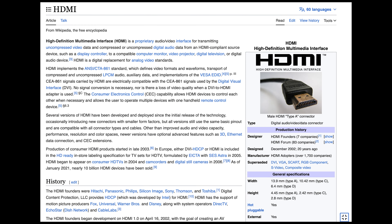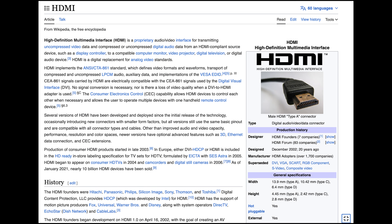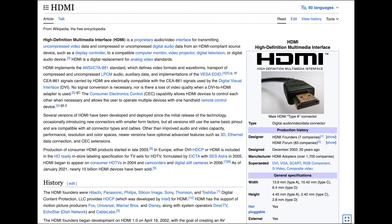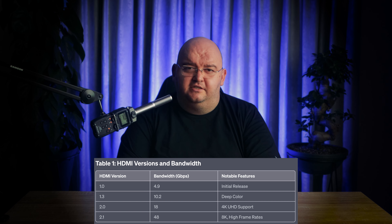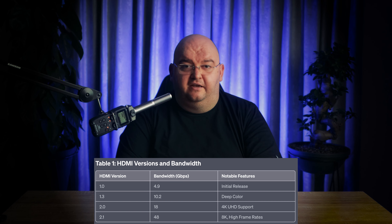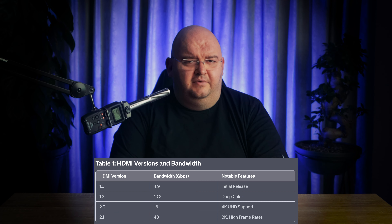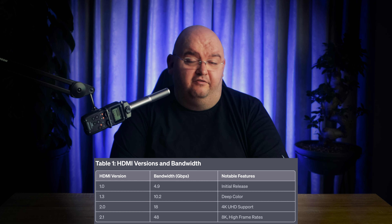Let's kick things off with the basics: HDMI standards and versions. HDMI, or High Definition Multimedia Interface, came into the scene back in 2002 with HDMI 1.0. Over the years we've seen multiple iterations, like HDMI 1.3 which kicked the bandwidth up to 10.2 gigabits per second and introduced deep color. Fast forward to 2017 and we have HDMI 2.1, which ramps the bandwidth all the way up to 48 gigabits per second. That is a lot of data flowing through those cables.